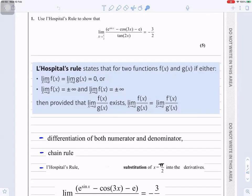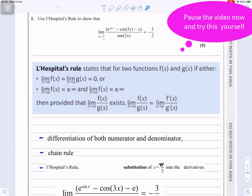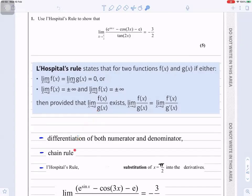What we're going to do now is differentiate both the numerator and the denominator. We'll use the chain rule and then apply L'Hôpital's rule and substitute x = π/2 into the derivatives. So those are the three things we're planning to do.